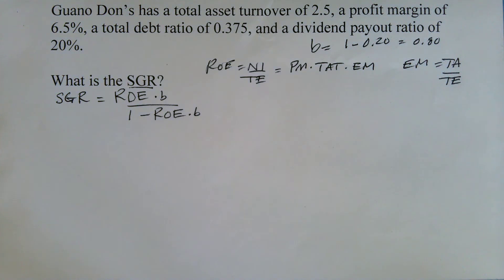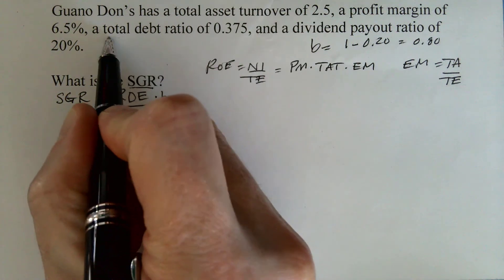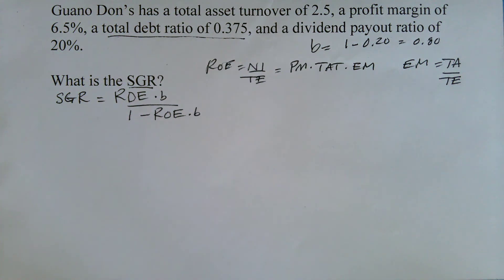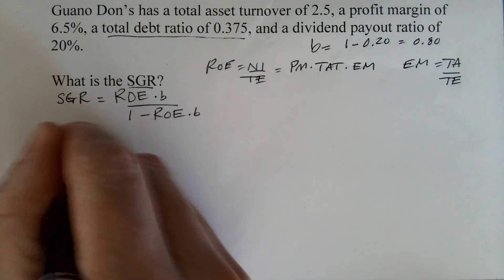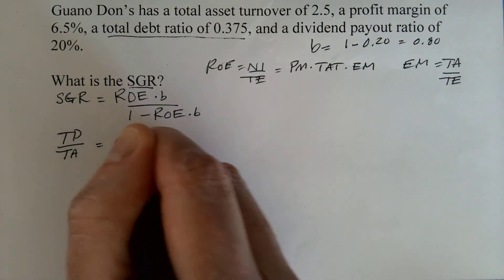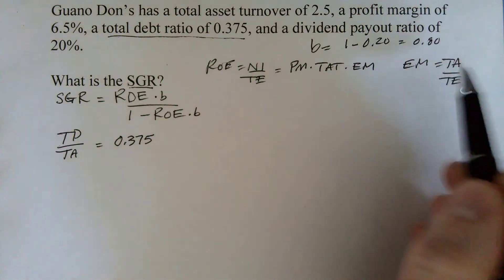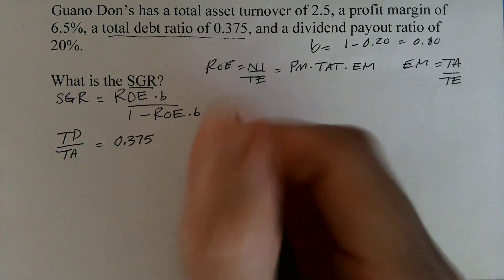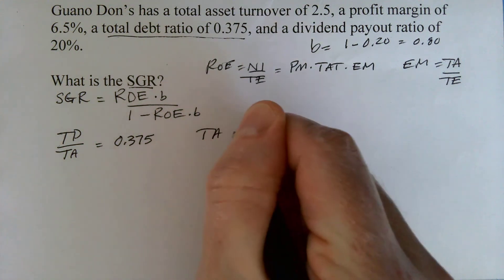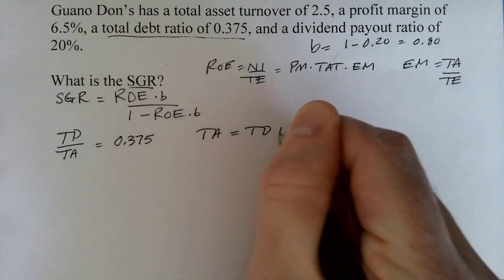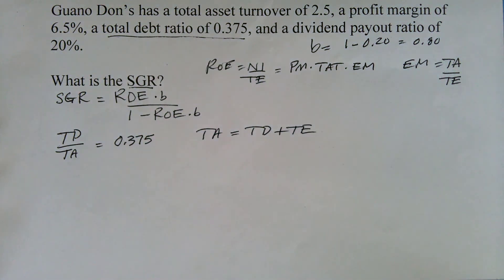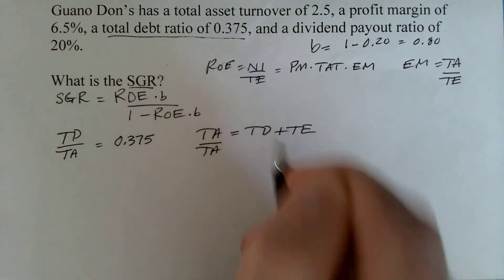And so we're going to need some information about the firm's capital structure. And the only piece of information that I see about the firm's capital structure is right here, total debt ratio of 0.375. And the total debt ratio is TD over TA. And so what we need to figure out is we need to get to TA over TE. Well, we know that total assets is equal to total debt plus total equity.